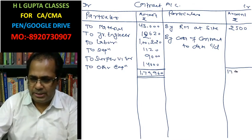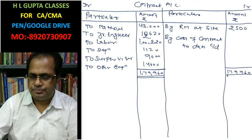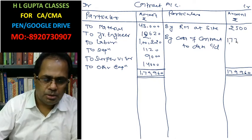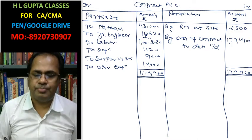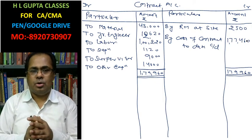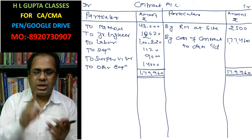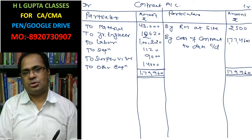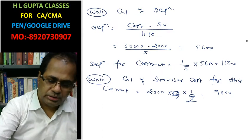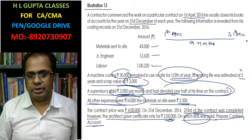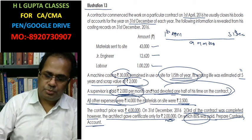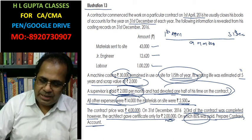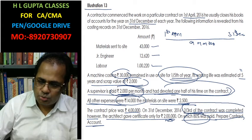The cost to date is Rs. 1,79,960. After subtracting materials at site of Rs. 2,500, the cost of contract to date is Rs. 1,77,460. Now, work certified is calculated on contract price (value), while work uncertified is calculated on cost. Two-thirds of the contract was completed by the contractor.